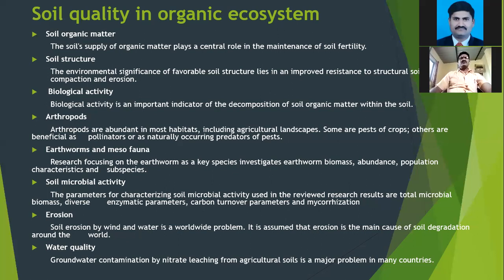Arthropods are abundant in most habitats, including the agricultural landscape. Some are pests of crops; others are beneficial as pollinators or naturally occurring predators of pests — natural enemies that attack pests and help reduce pest populations.